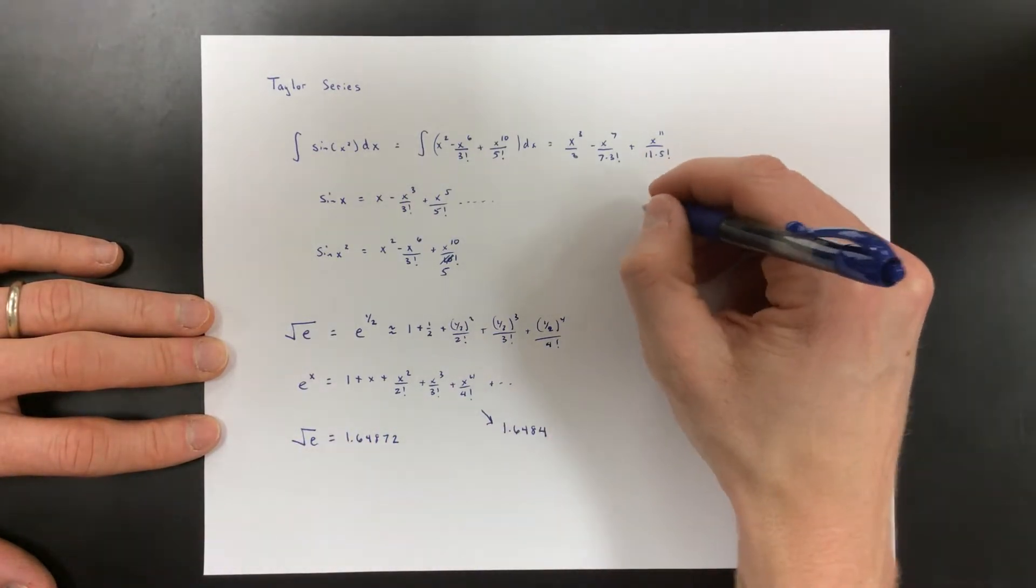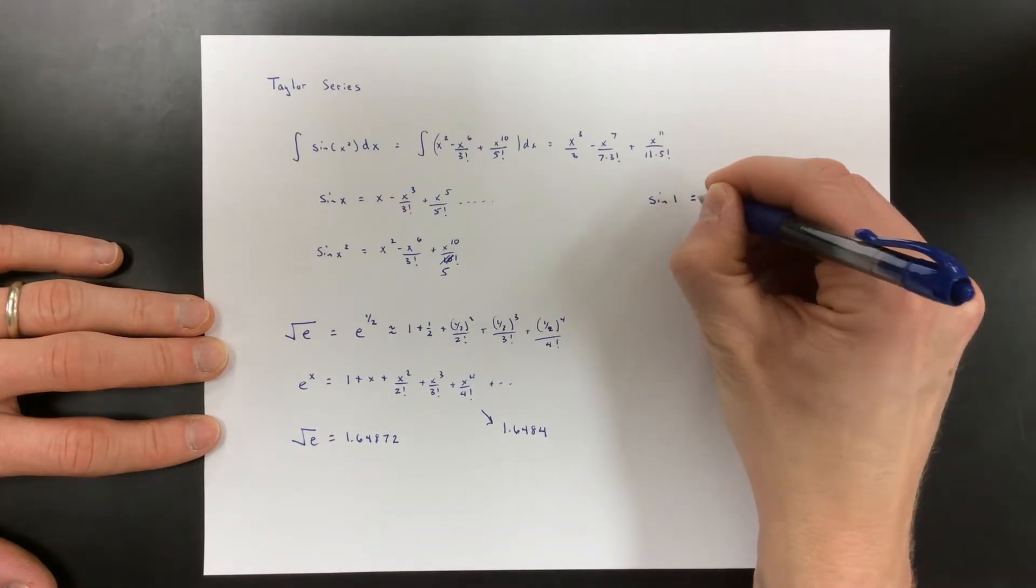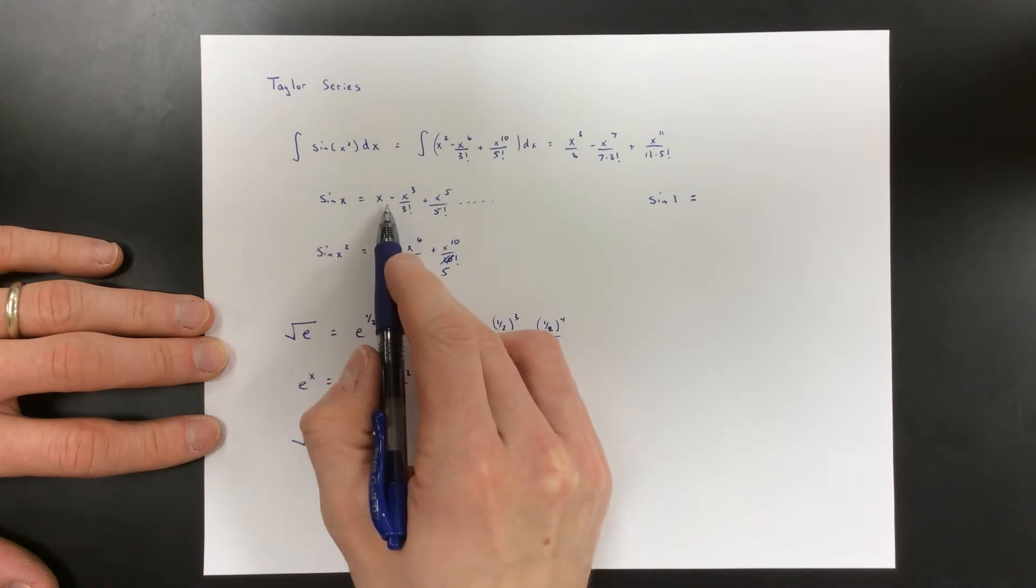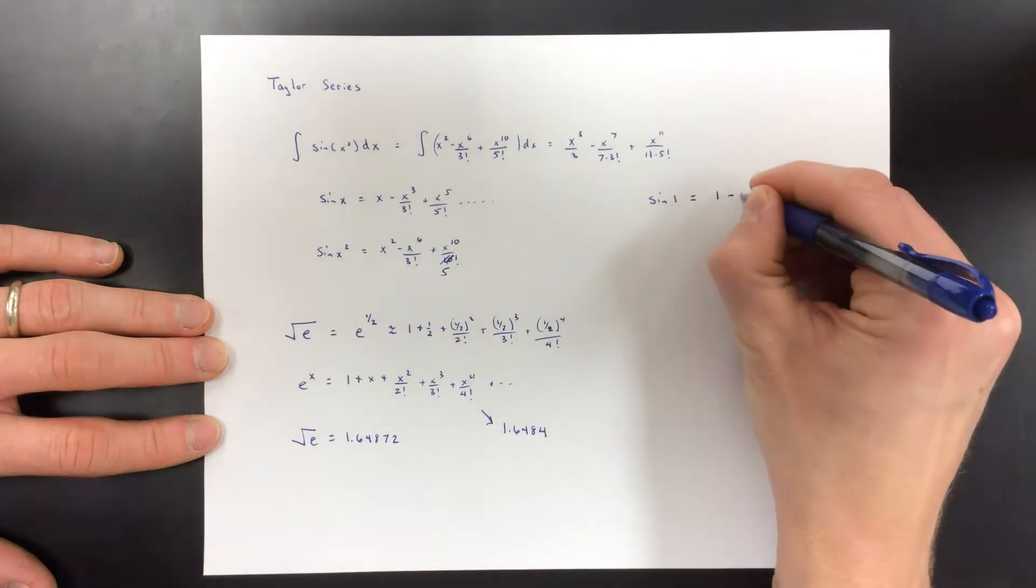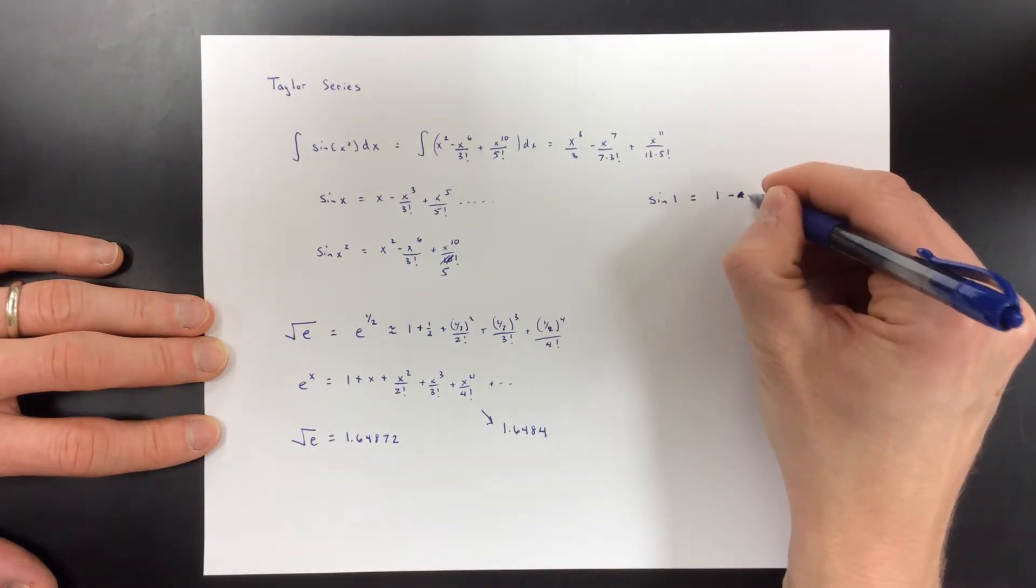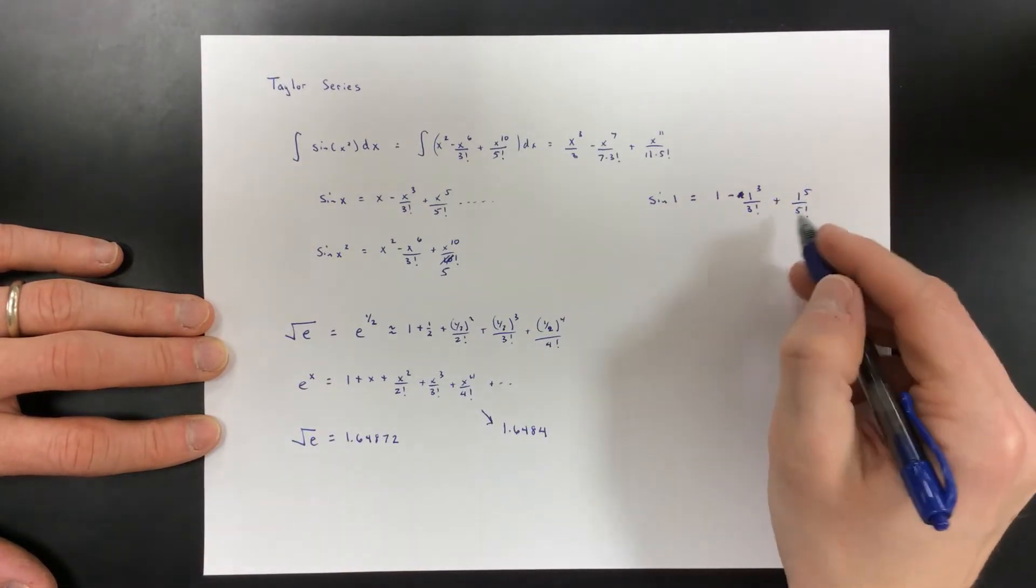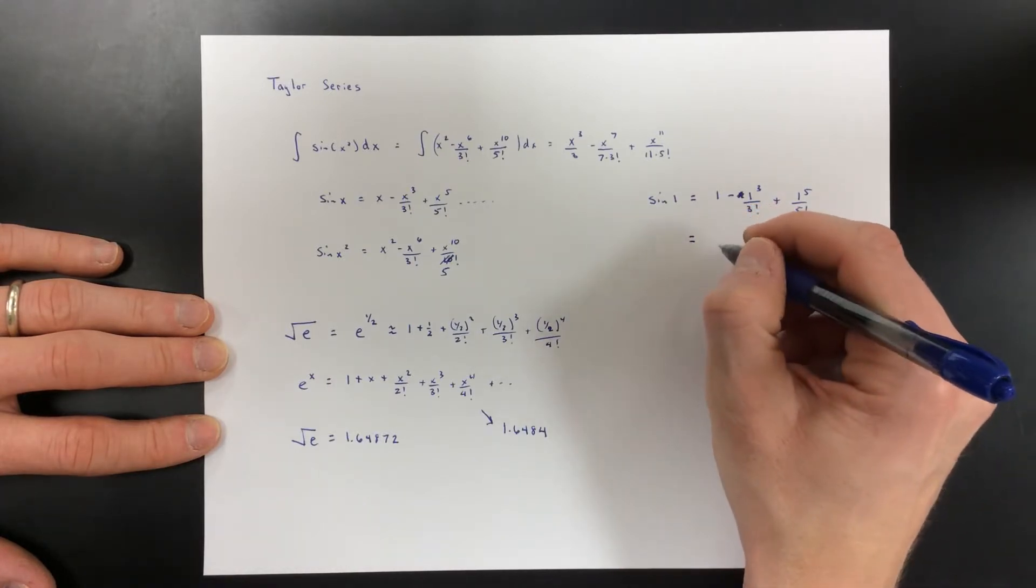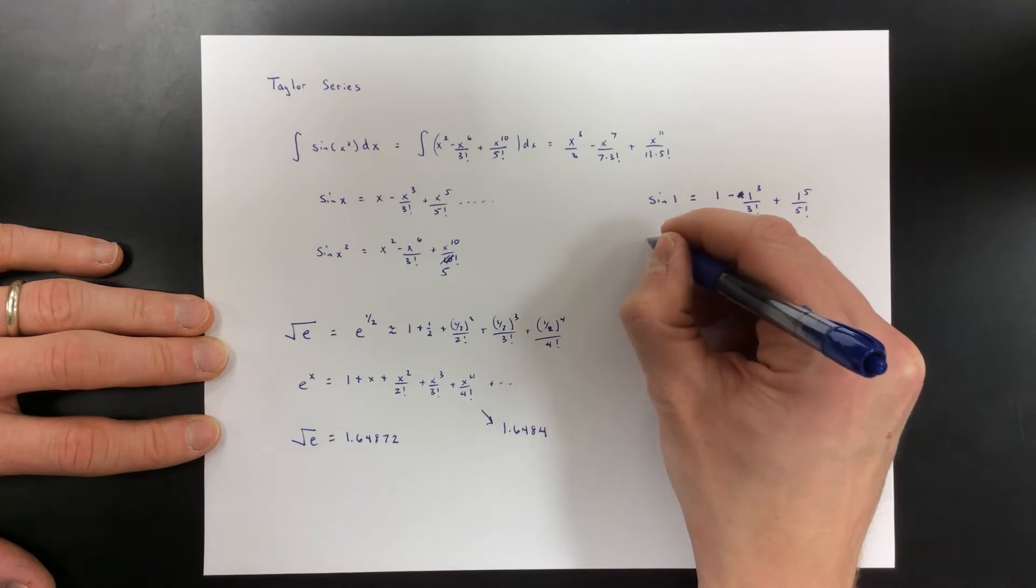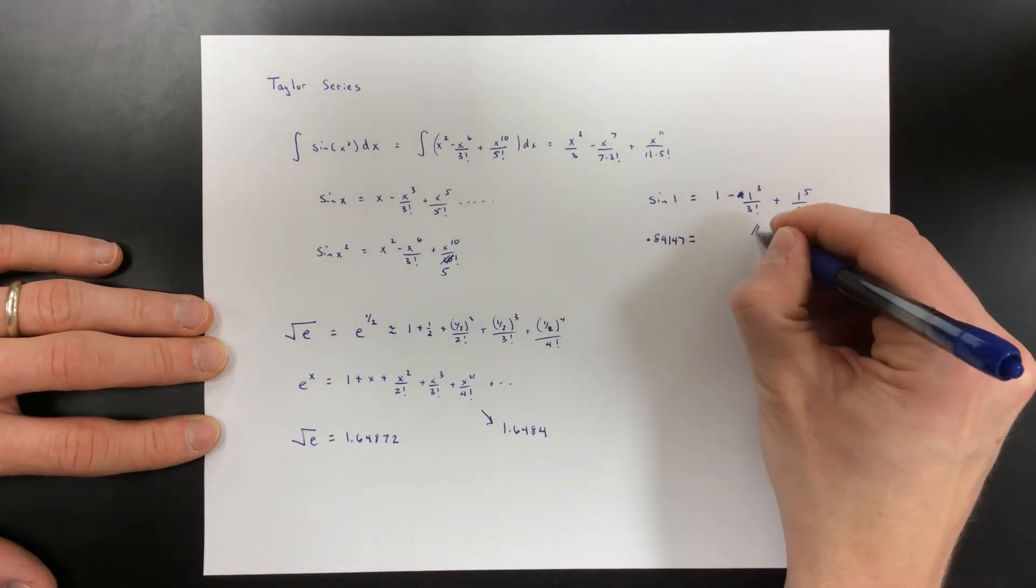How does your calculator know what sine of 1 is? It doesn't know what sine of 1 is - it knows that sine is this series, and this is just taking 1 and putting it in for x. It does 1 minus 1 cubed over 3 factorial plus 1 to the 5th over 5 factorial.